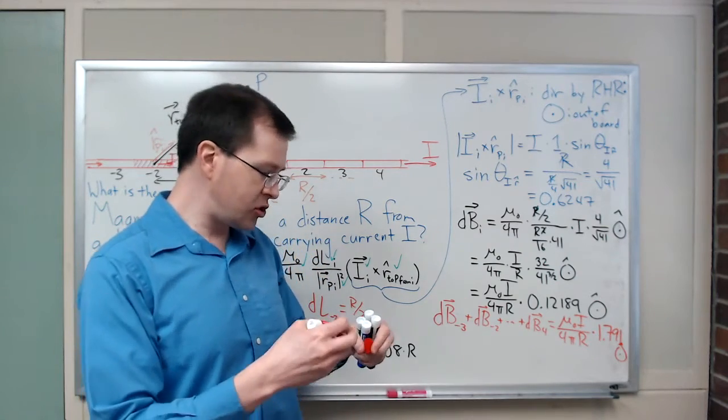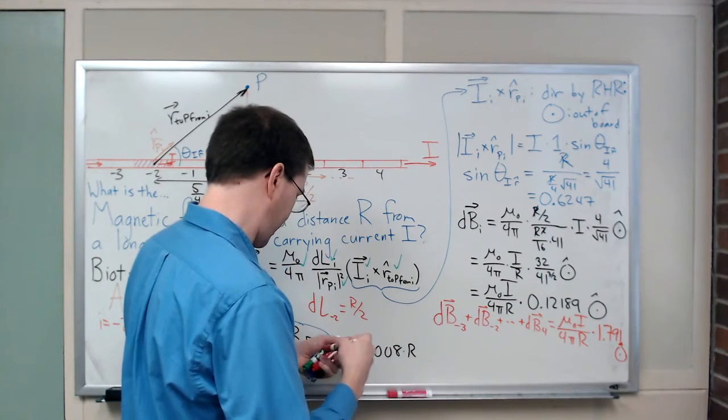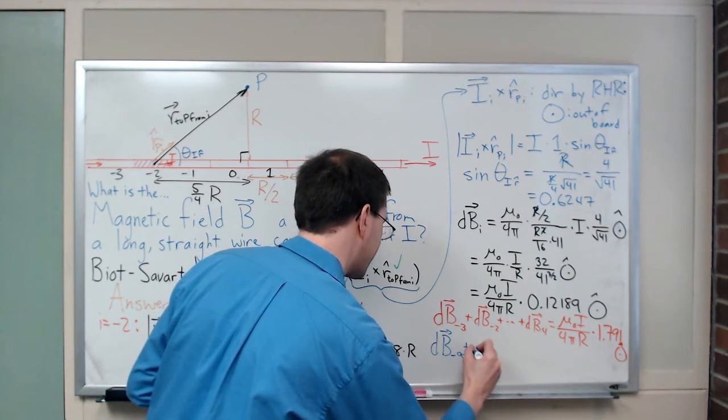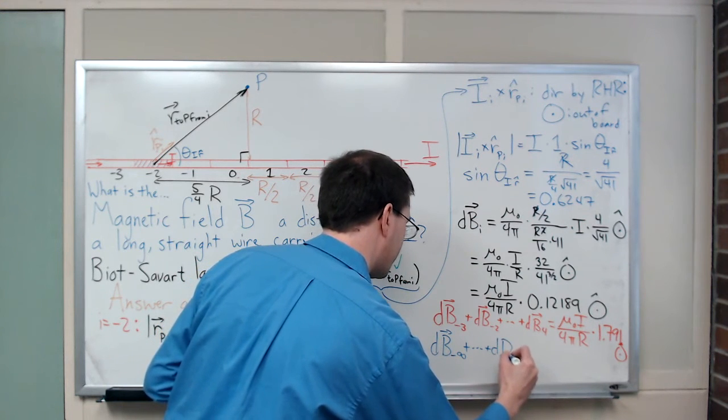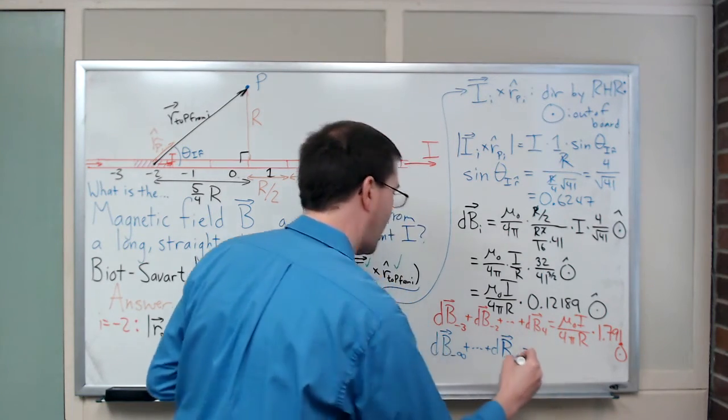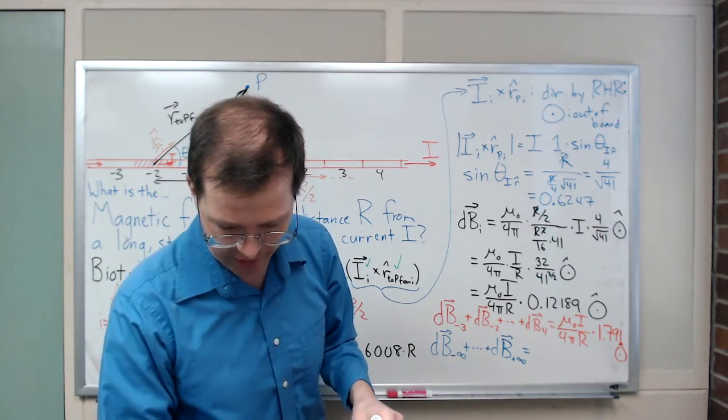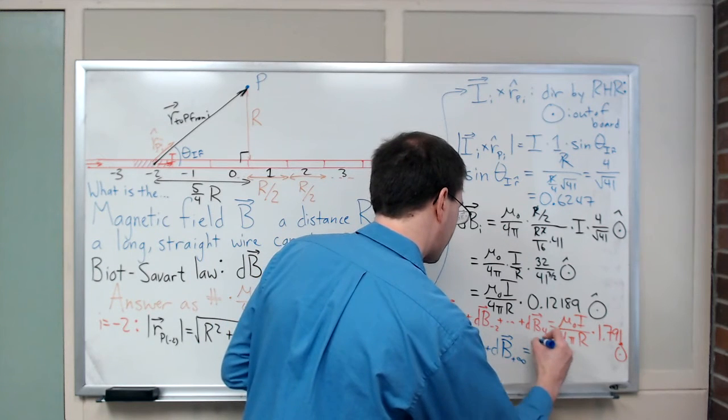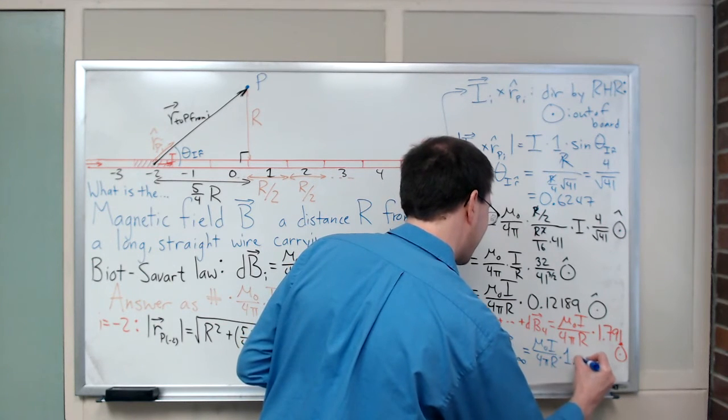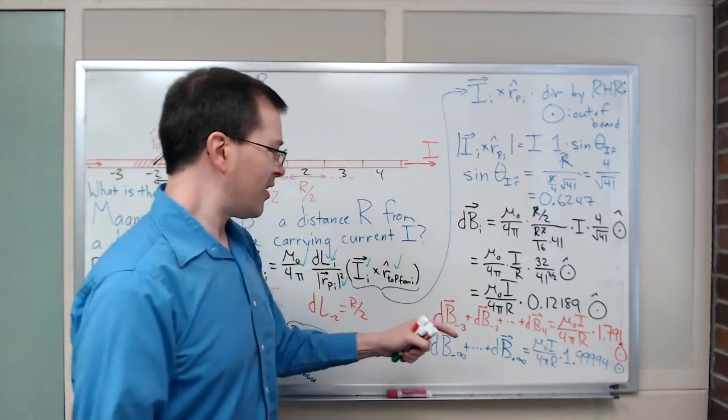Now if I were to do all of them, if I were to go all the way from dB minus infinity plus dot dot dot plus dB plus infinity, if I added them all up, they would still all be out of the board. And when I add it up, I did this, I used a computer to do it rather. I got mu naught I over 4 pi R times 1.99994 out of the board. That's very close to 2.